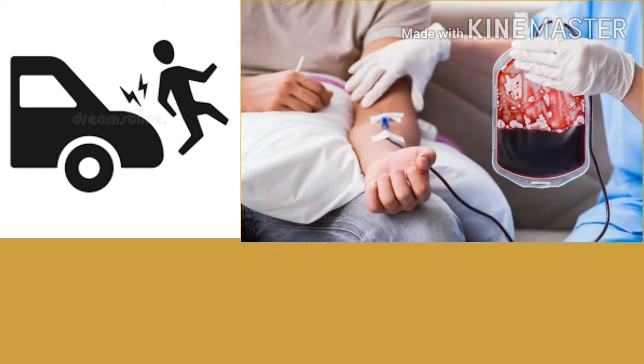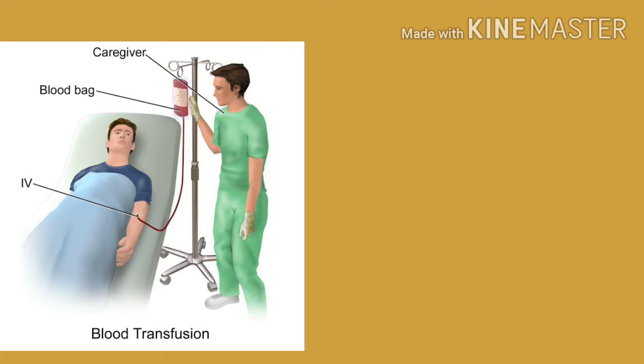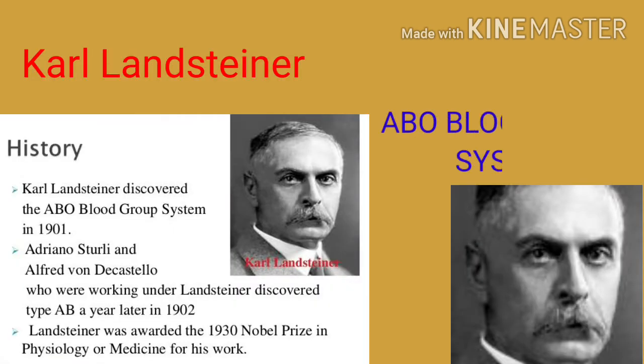When a person loses lots of blood through accident or illness, it must be replaced. When transfusions from one person to another were tried, the result was very often disastrous. Karl Landsteiner discovered the ABO blood group system — when different people's blood was mixed, the blood cells sometimes clotted. He explained in 1901 that people have different types of blood cells, that is, there are different blood groups.